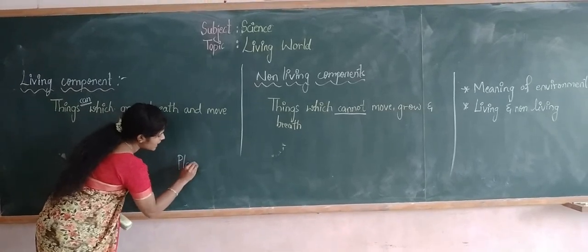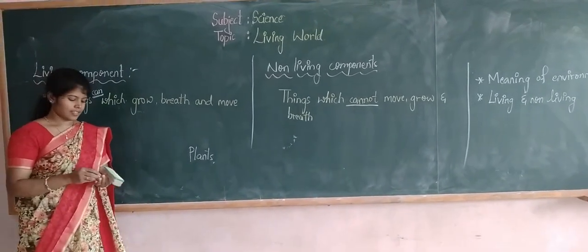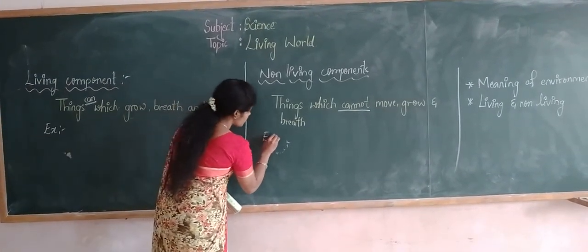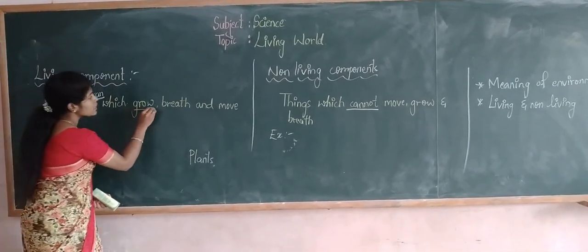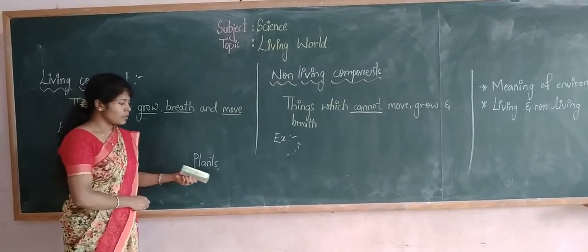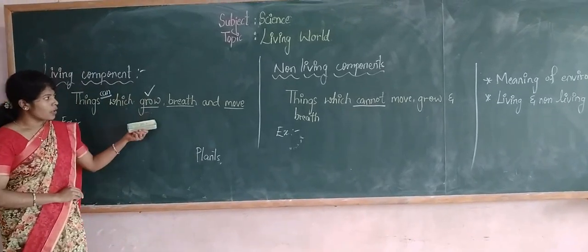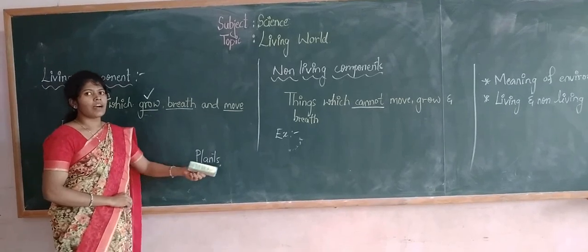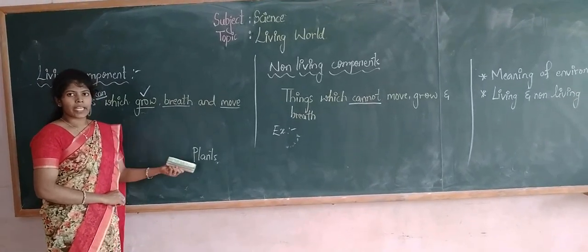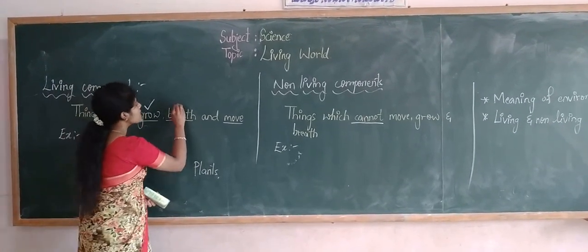Now, is a plant an example of living or non-living? Can you guess? Here we can see that plants grow, breathe, and move. Is it possible for plants to grow? A seed is converted into a plant — after some days we can easily say that plants are growing. Do plants breathe? Yes. Of course, at the time of photosynthesis, plants start breathing. They intake carbon dioxide gas and breathe out oxygen gas.